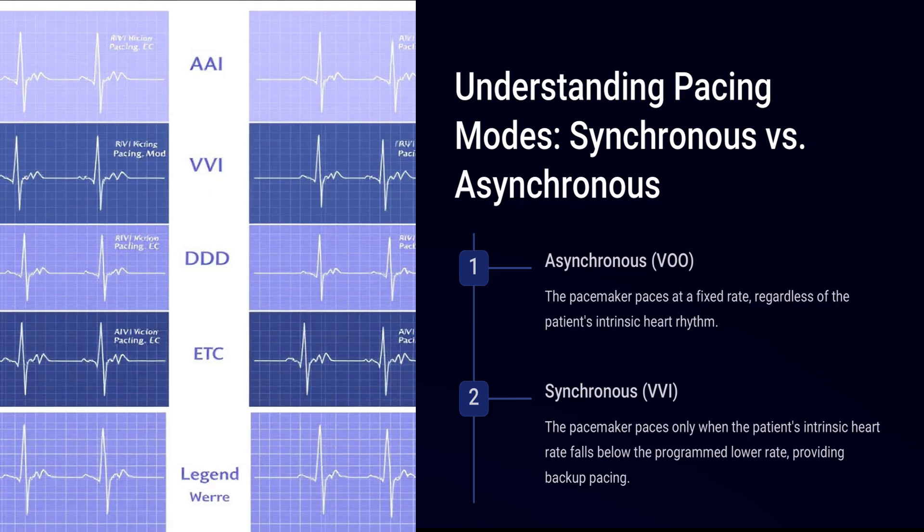Understanding basic pacing modes: asynchronous versus synchronous mode. In asynchronous mode, the pacemaker paces at a fixed rate regardless of the patient's intrinsic heart rhythm. In synchronous mode — for example VVI — the pacemaker paces only when the patient's intrinsic heart rate falls below the programmed lower rate, providing backup pacing.